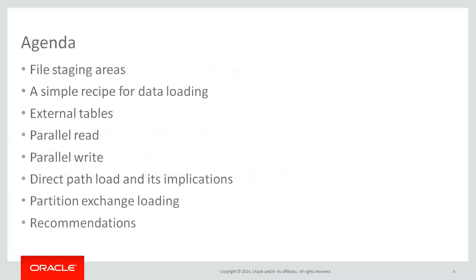The agenda: I'll talk very quickly about file staging areas, then move on to my simple recipe for loading data. I'll cover external tables and what they are, then the trickier topic of parallel reading and writing data. If you're using direct path load we'll look at the implications, and then we'll look at partition exchange loading before moving on to recommendations.